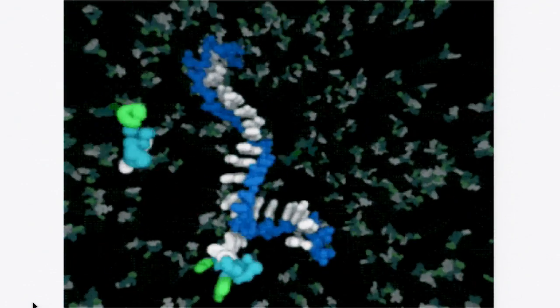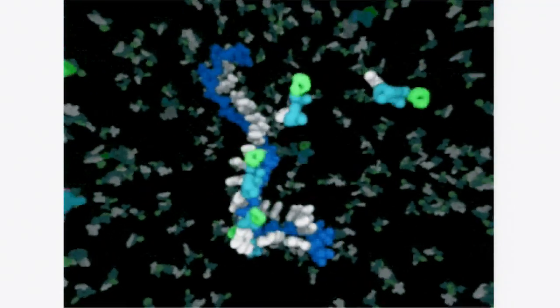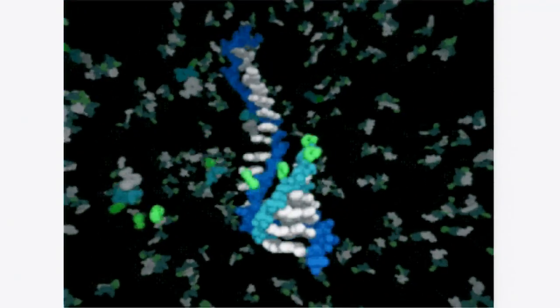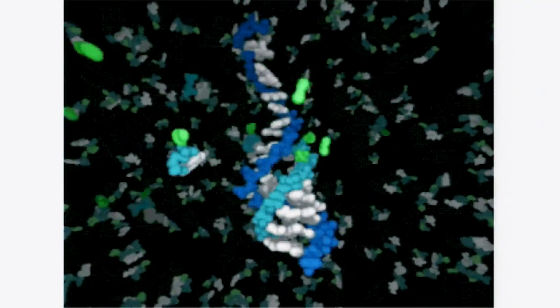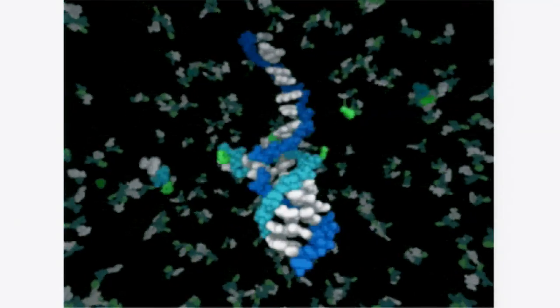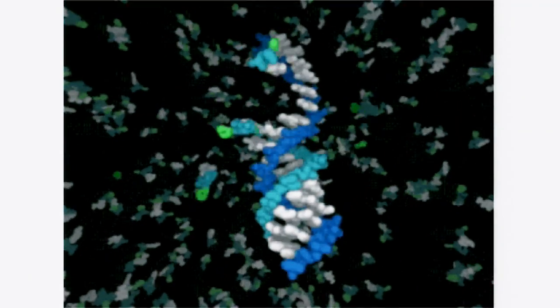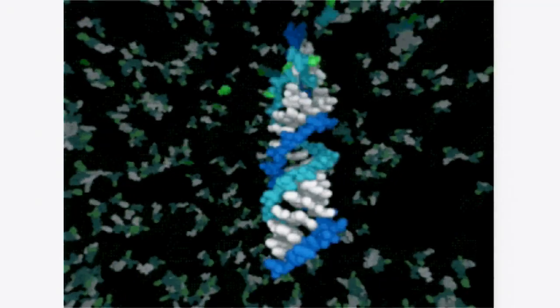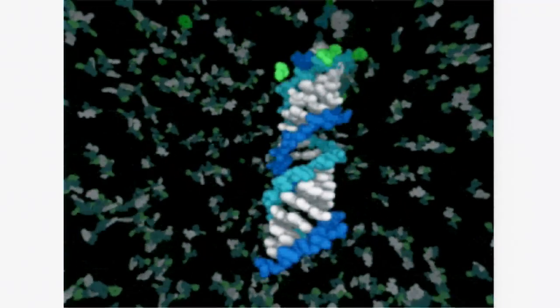This animation shows a mechanism by which RNA is replicated in a non-enzymatic manner. Single nucleotides find their complementary base on the template strand and undergo a chemical reaction to form a polymer. This reaction is possible because the nucleotides have been chemically activated so as to increase their reactivity.